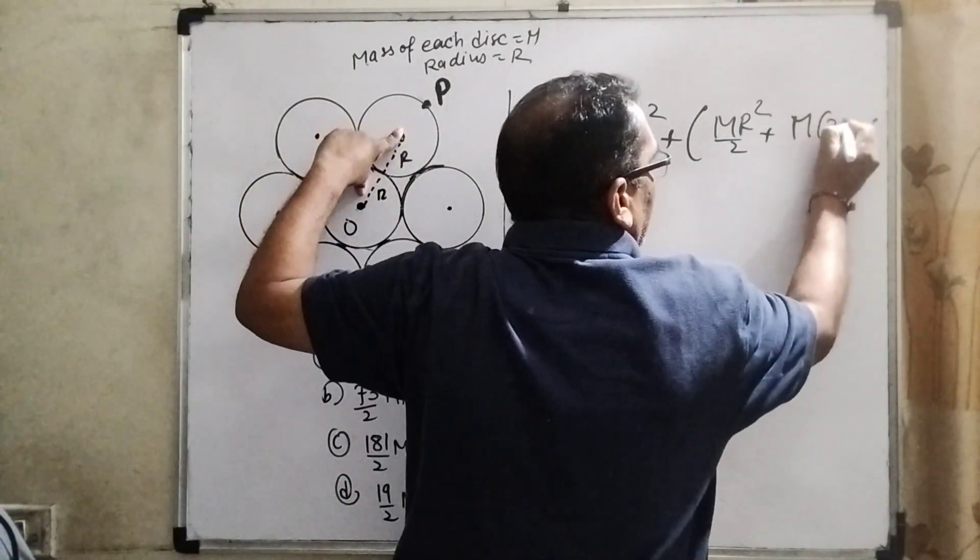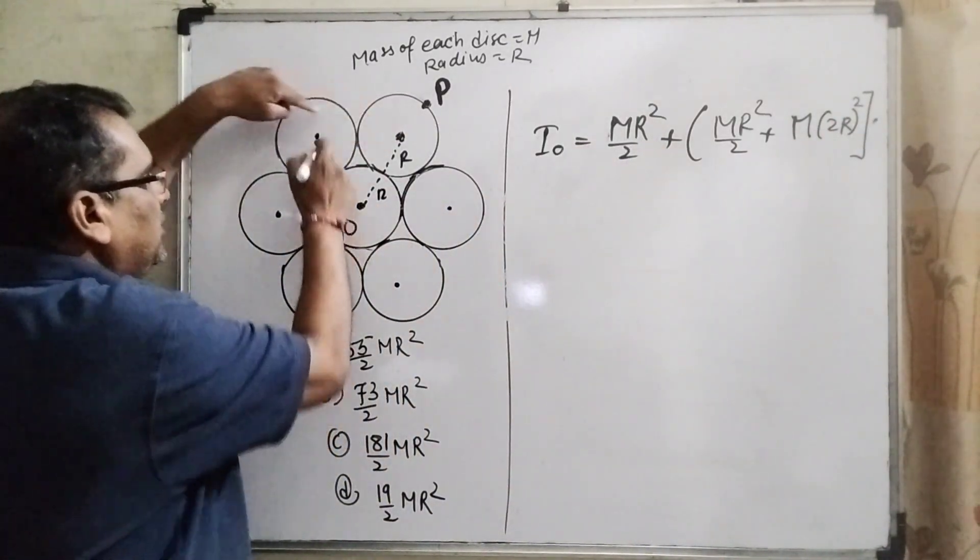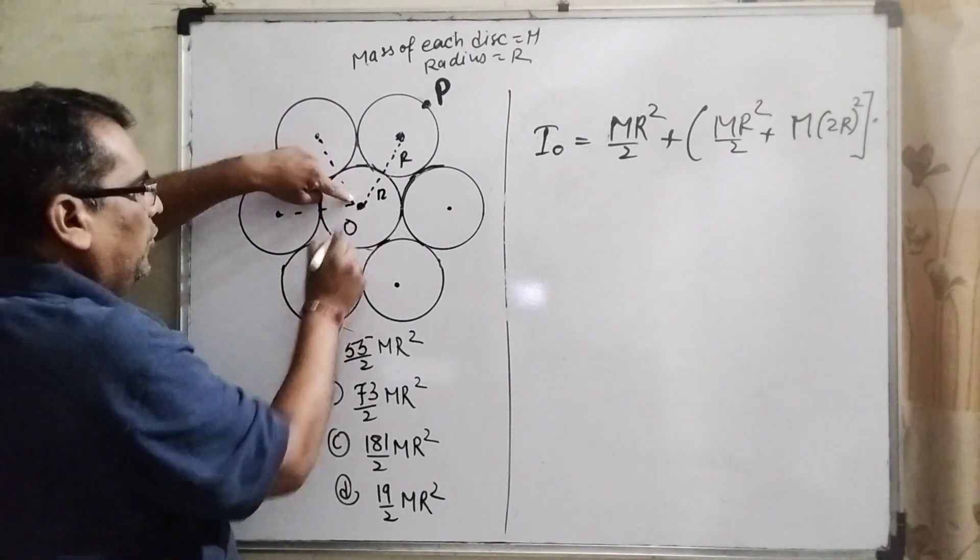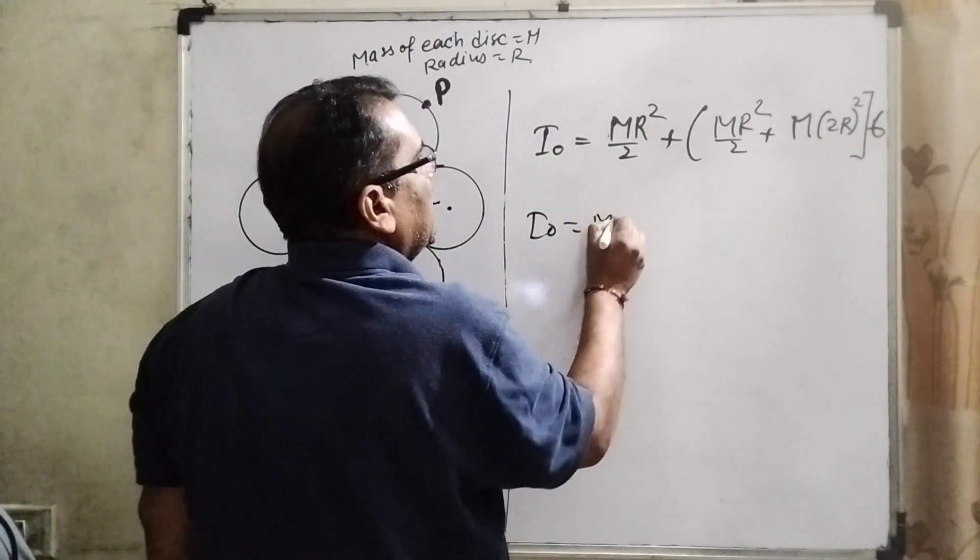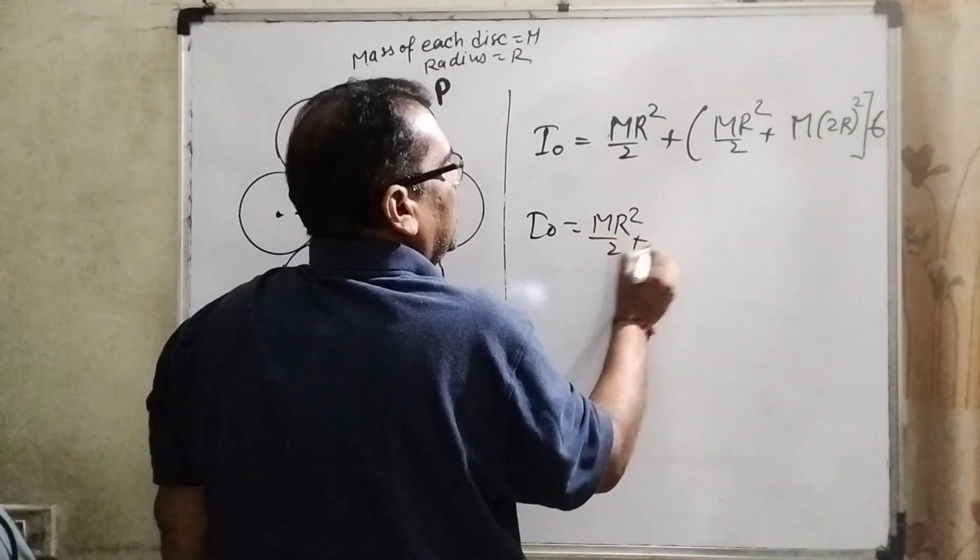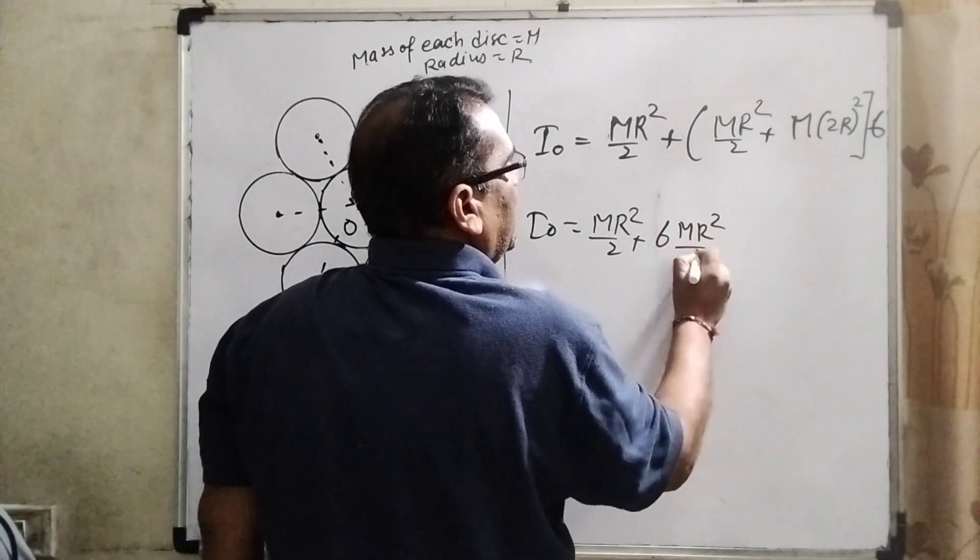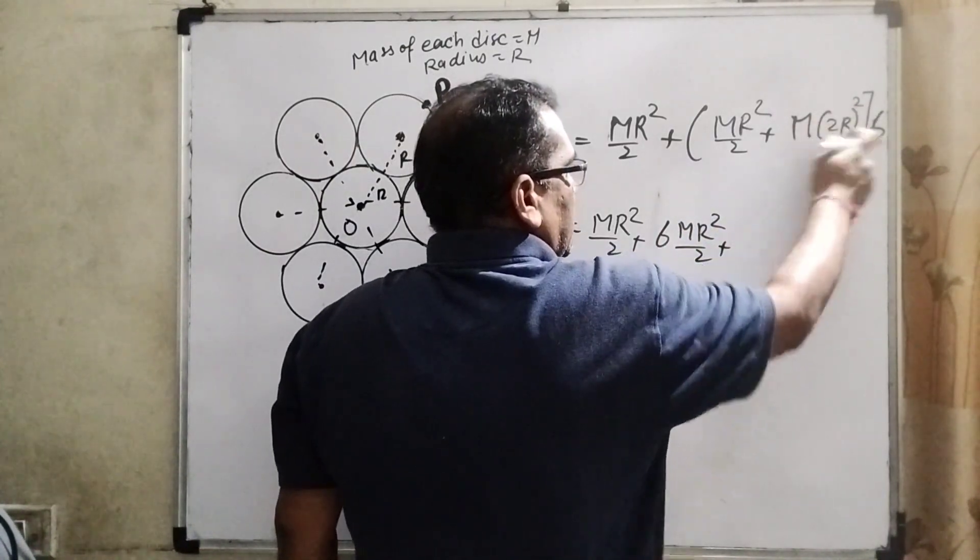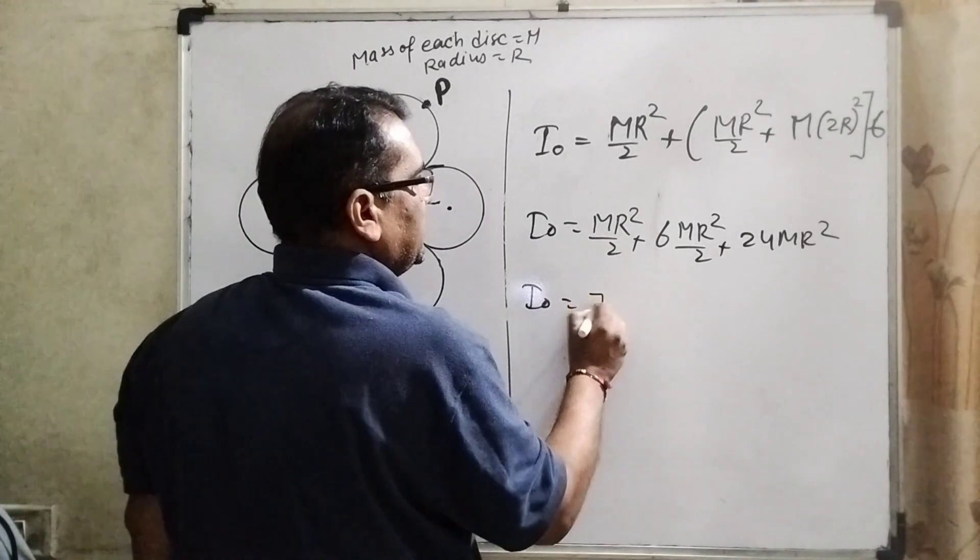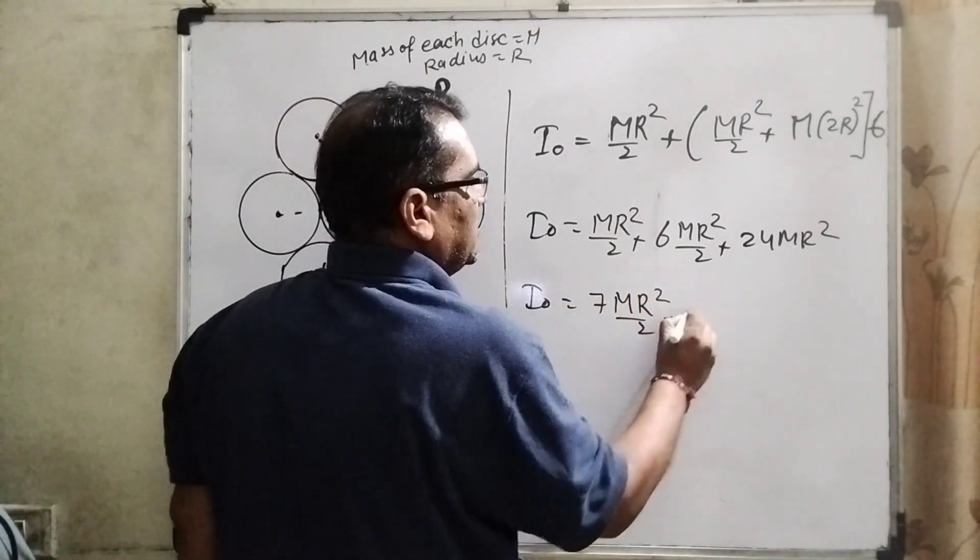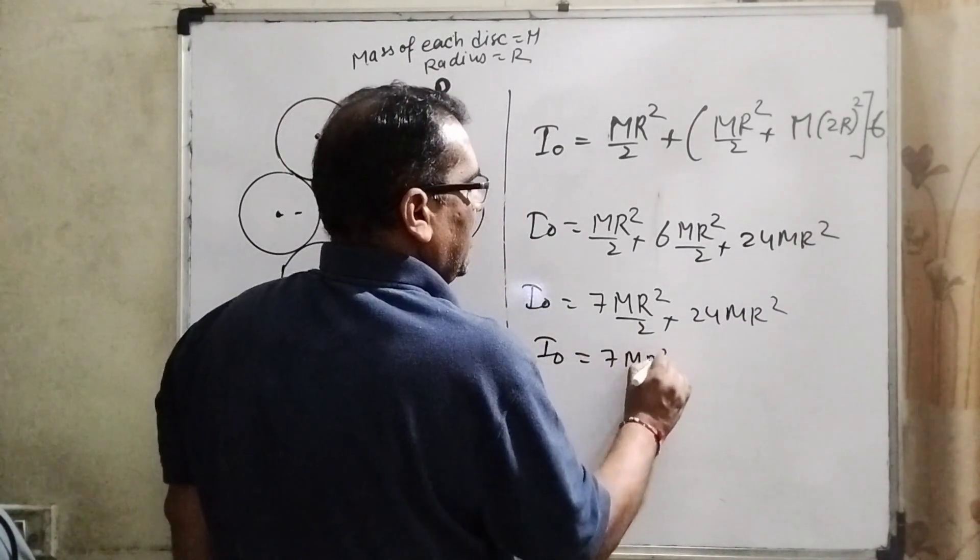four, five, and six. So multiply by six. Then I₀ total is MR²/2 plus 6 times MR²/2 times (2R)². Two squared means 4, so 4 times 6 is 24MR². Then I₀ equals - this whole system is 7 times MR²/2 plus 24MR². Then I₀ equals 7MR²/2